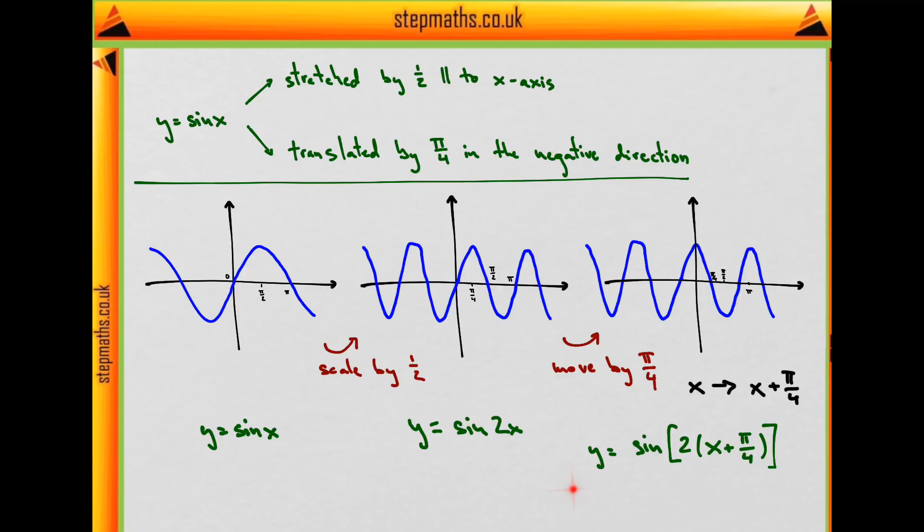And so finally, the equation of our last graph is y equals sine of 2 times, and instead of x, we have x plus π/4, and that can be simplified to this form, which in the exam was option H.